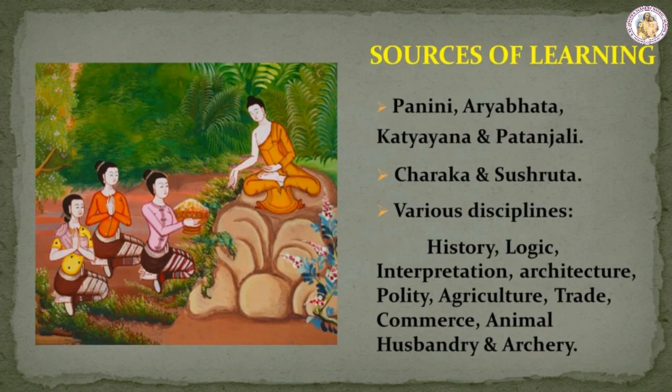Sources of Learning. The names of Panini, Aryabhata, Katiayani and Patanjali, and the writings and medical treatises of Charaka and Shishruta were also some of the sources of learning. Various disciplines such as history, logic, interpretation, architecture, polity, agriculture, trade, commerce, animal husbandry and archery were taught. The gurus and their students worked consciously together to become proficient in all aspects of learning.